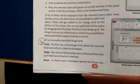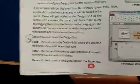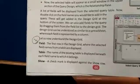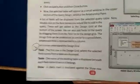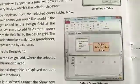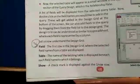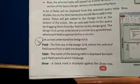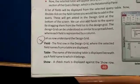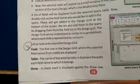Let us now understand the design grid fields. The first row in the design grid shows the selected field names from the table. The Table row shows the name of the existing table beneath each field name, indicating which table it belongs to. The Show row displays a check mark against each field.